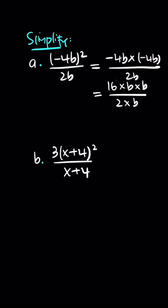Now we can simplify. This equals to 8. This is cancelled. Now we have remaining 8b over 1 that equals to 8b. You can do the same for question b.